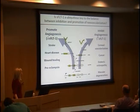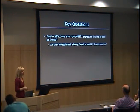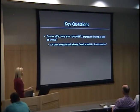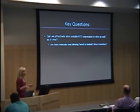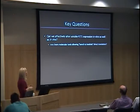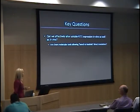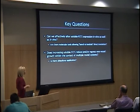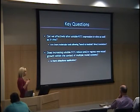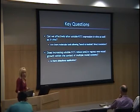This is the key question. To address it preliminarily, some key questions needed to be answered: can we effectively alter the expression of soluble FLT1 in vitro and in vivo in mouse models? Are there molecular tools allowing direct bench-to-bedside translation — tools usable in mice that could have potential for use in humans? Does increasing soluble FLT1 reduce or regress new blood vessel growth within multiple model systems, showing ubiquitous application? And is the level of inhibition sufficient to alter disease progression?